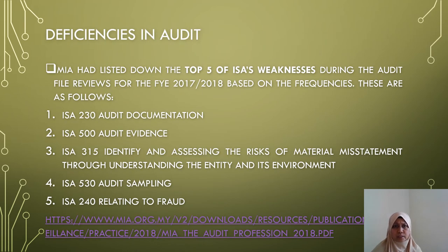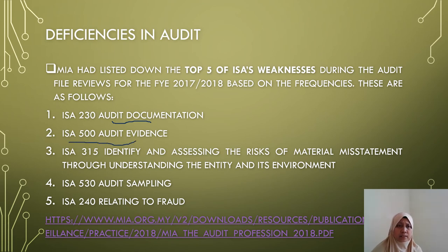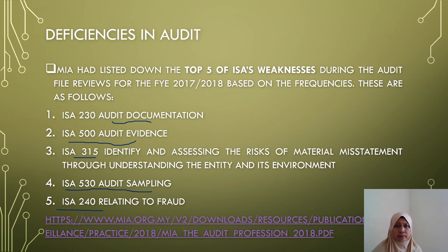MIA listed the top five RSA weaknesses during audit file reviews for the financial year-end 2017–2018 based on frequencies. These are: RSA 230 on audit documentation; RSA 500 on audit evidence; RSA 315 on identifying and assessing the risk of material misstatement through understanding the entity and its environment; RSA 530 on audit sampling; and RSA 240 relating to fraud. You can look at the provided link for further information.